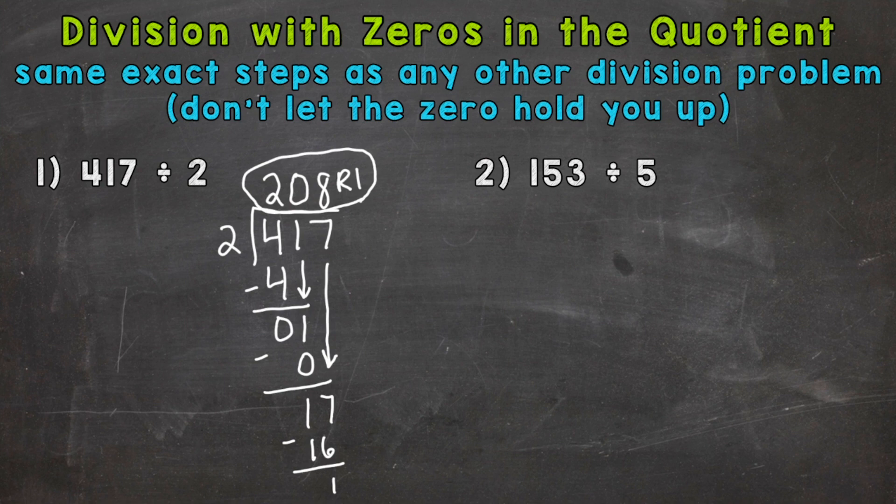That 0 in the tens place is very important. If we didn't put it there, and we just continued our division problem and brought down the 7 without putting a 0, we would have gotten 28 remainder 1, which is obviously a lot different than 208 remainder 1. So the 0 in the quotient was very important.